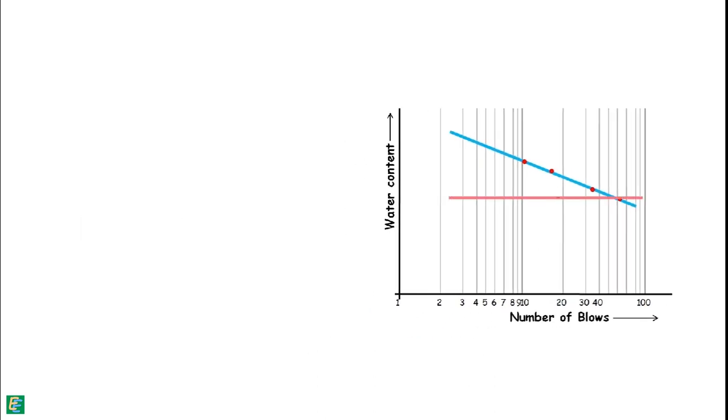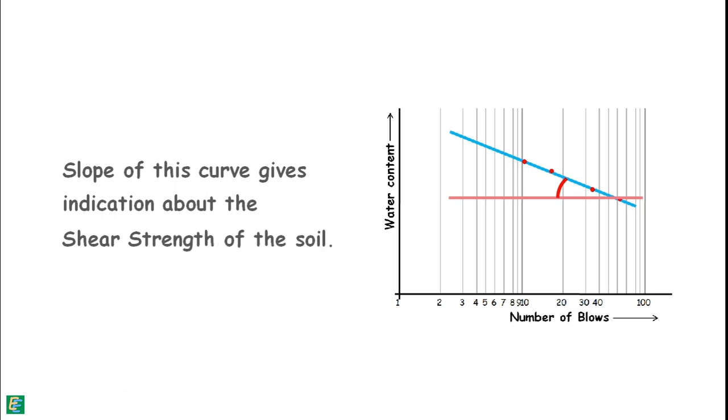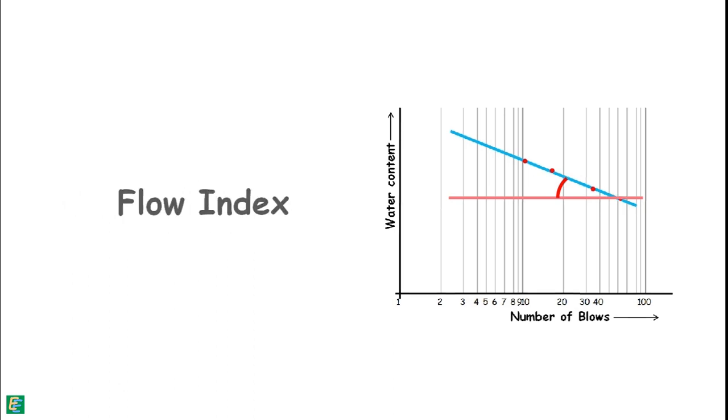The slope of this curve gives us an indication about the shear strength of the soil and it is known as the flow index of the soil. It is denoted as IF.